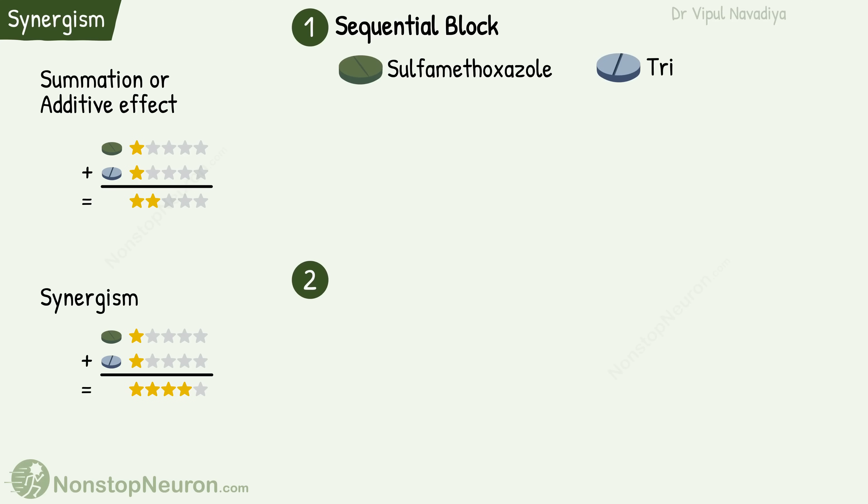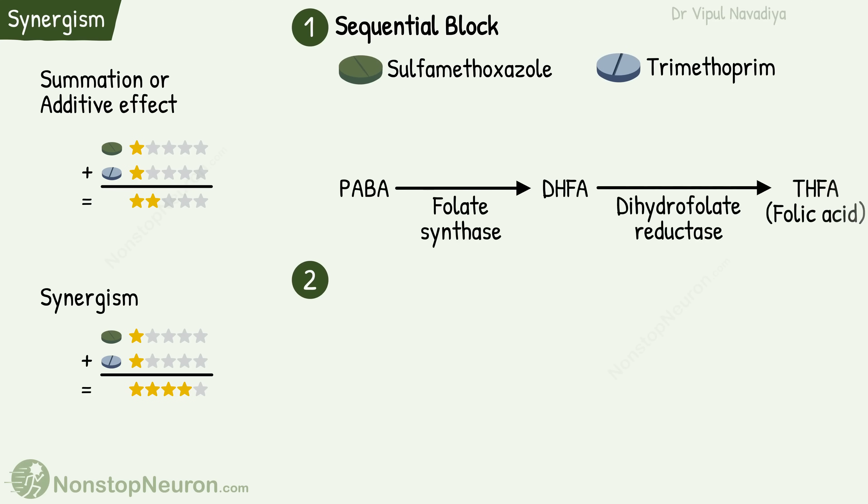For example, the sulfamethoxazole plus trimethoprim combination on the pathway of folic acid synthesis. Sulfamethoxazole inhibits folate synthase, and trimethoprim inhibits dihydrofolate reductase. If used separately, they act as bacteriostatic drugs — they only stop the growth of bacteria but don't kill them. However, when combined, the sequential block produces a bactericidal effect, meaning it kills the bacteria.